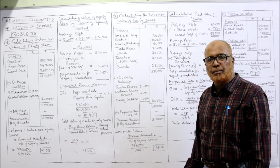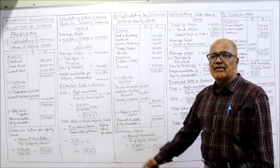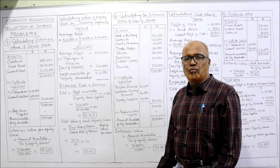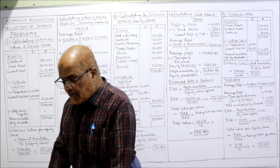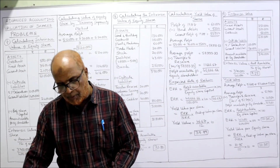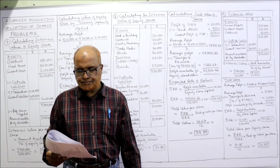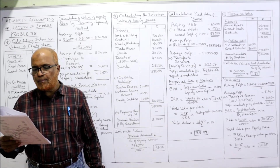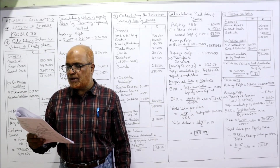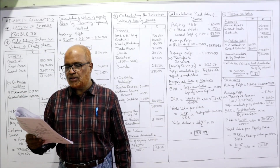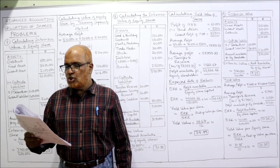So in a single problem, we have calculated both values. Now the 8th problem: the following is the balance sheet of Messers HDSI and Company Private Limited as on 31st December.